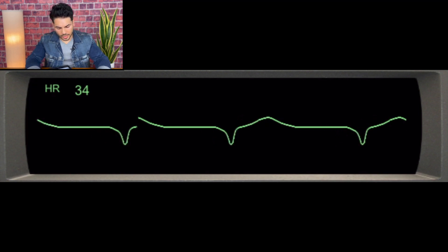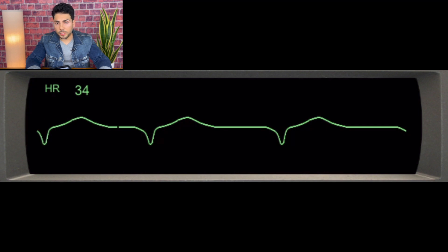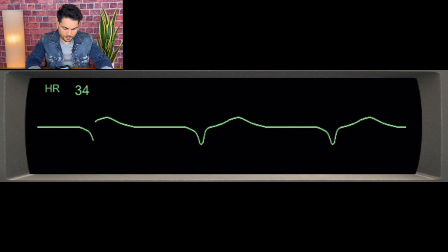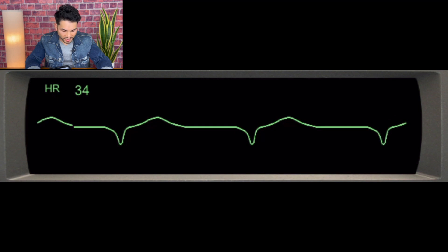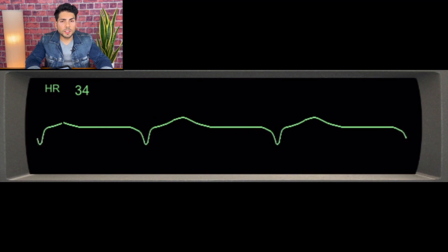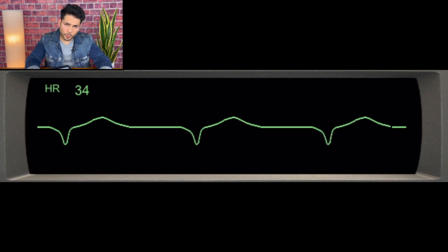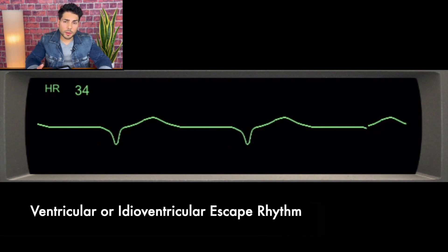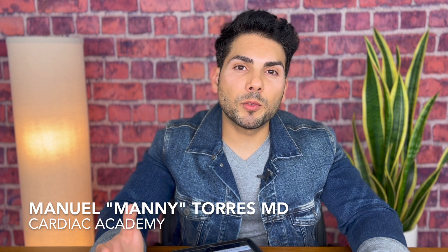Next example. P waves? No, there are no P waves. Is the QRS narrow or wide? Wide QRS. Is the rhythm regular or irregular? Very regular. However, it is very bradycardic — the heart rate is 34. The ventricular intrinsic heart rate is 30 to 45, so it's in that range. We see a wide QRS and no P waves. We can conclude this is a ventricular escape rhythm, also known as an idioventricular escape rhythm.